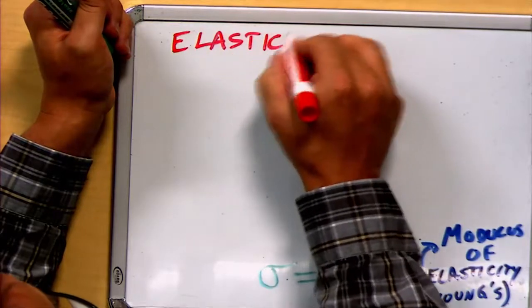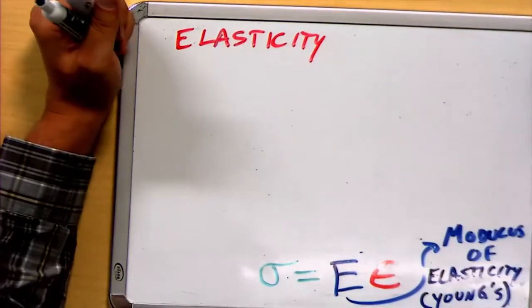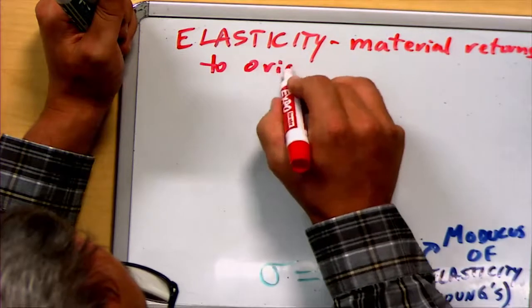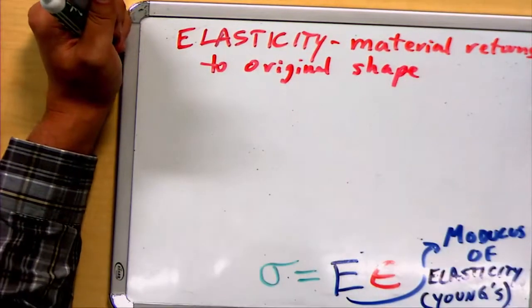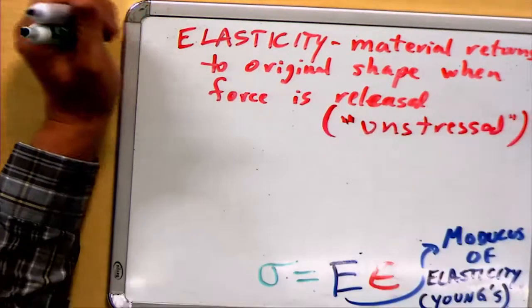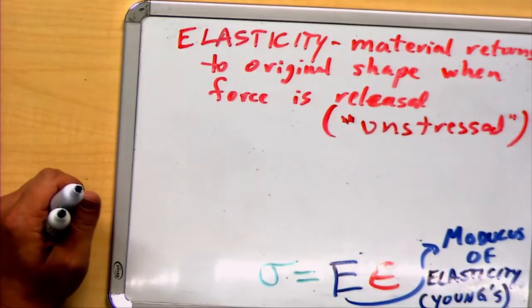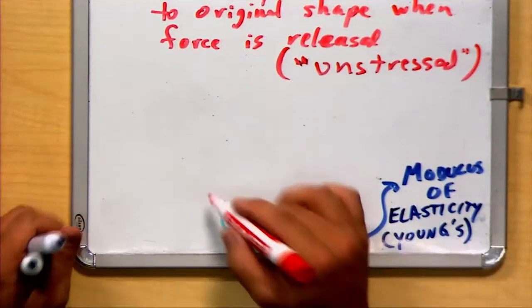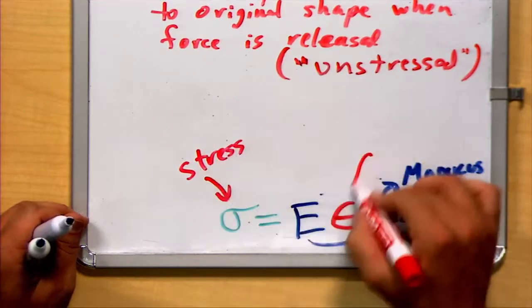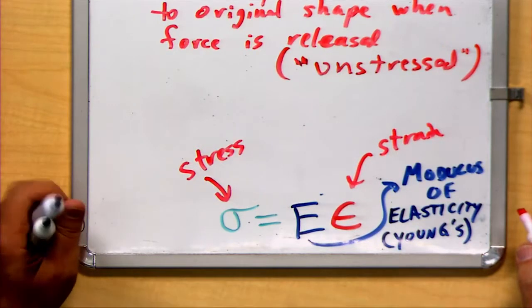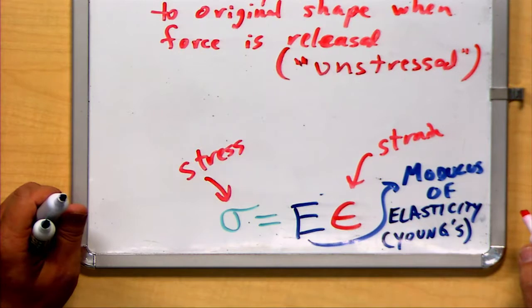Elasticity has a special meaning. It means that the material returns to its original shape when force is released. In other words, when the material is unstressed. So this relationship we have here that the stress is proportional to the strain only applies for a sort of certain range of stress and strain. Once we get to the point that the material starts to fail, this is no longer applicable, as we'll see in a later discussion.